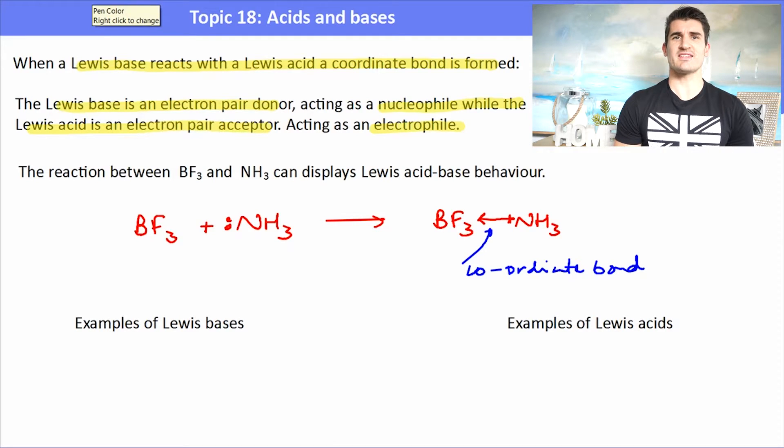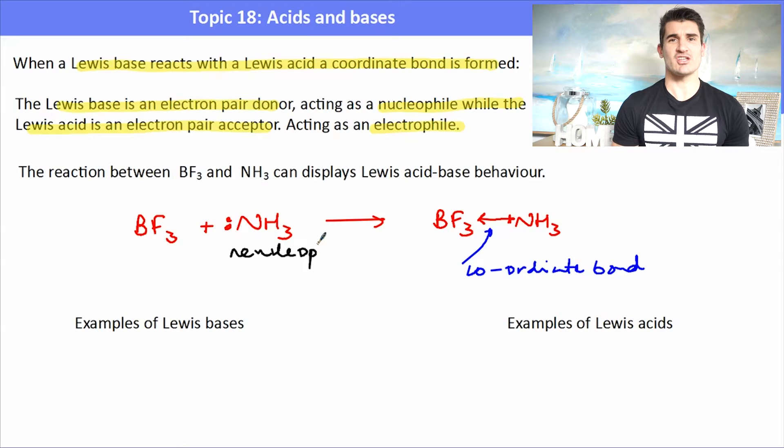Examples of Lewis acids include BF3, SO3, and H plus. H plus doesn't have an electron so in fact is electron deficient. Examples of Lewis bases include NH3, ammonia, OH minus, the hydroxide ion, and water. They're all good examples of Lewis bases.